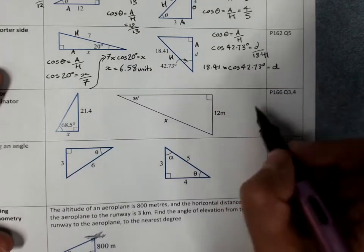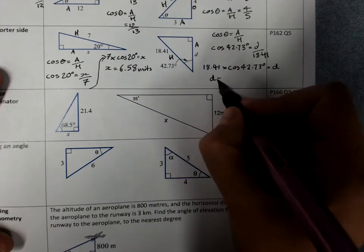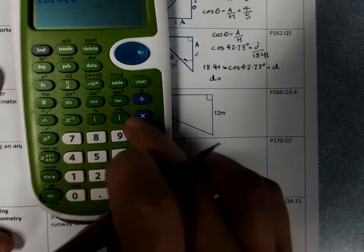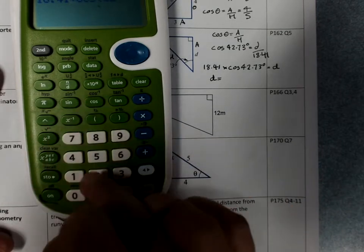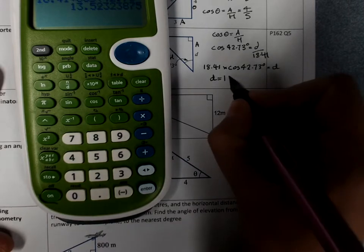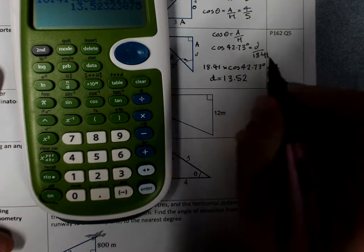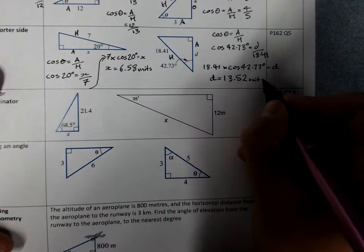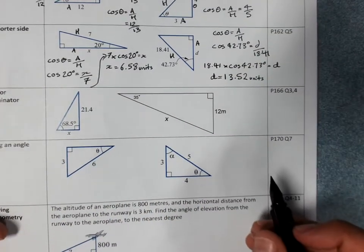Don't forget your degrees sign. D equals. Type that into the calculator. 13.52. Check for units. So we'll just say units. So we've found sides.